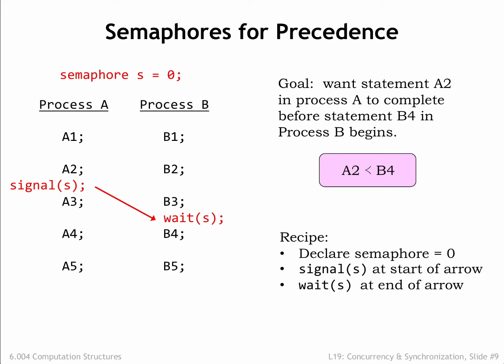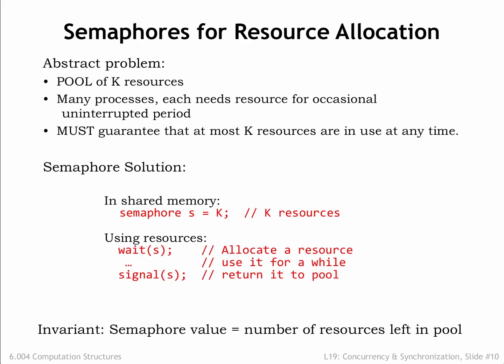By initializing the semaphore S to 0, we enforce the constraint that the first call to signal(S) had to complete before the first call to wait(S) would succeed. Another way to think about semaphores is as a management tool for a shared pool of k resources, where k is the initial value of the semaphore. You use the signal operation to add or return resources to the shared pool, and you use the wait operation to allocate a resource for your exclusive use. At any given time, the value of the semaphore gives the number of unallocated resources still available in the shared pool. Note that the wait and signal operations can be in the same process, or they may be in different processes, depending on when the resource is allocated and returned.